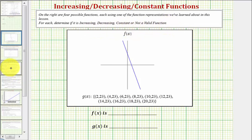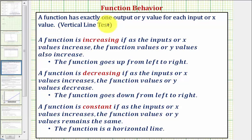So for a quick review, remember a function has exactly one output or y value for each input or x value. Graphically, we can determine if we have a function using the vertical line test.